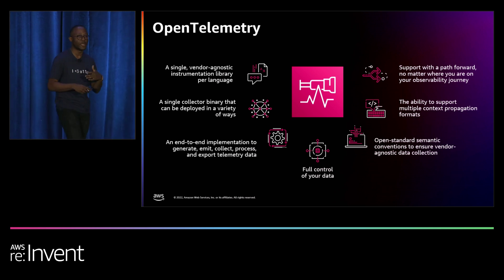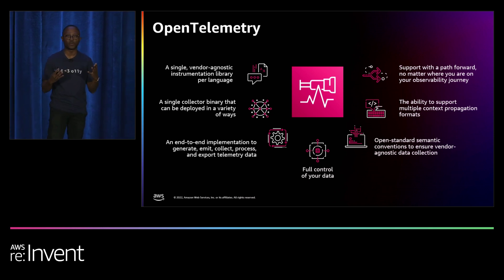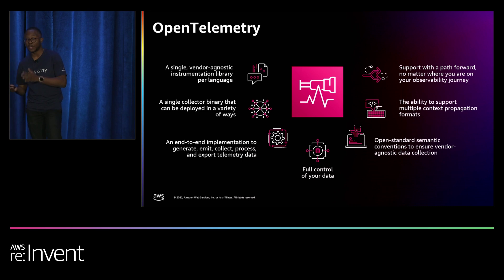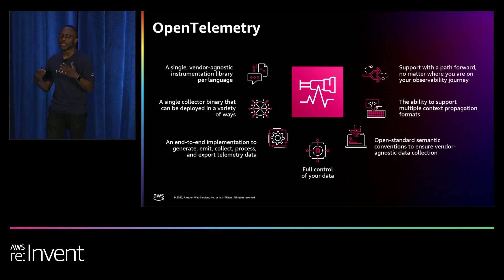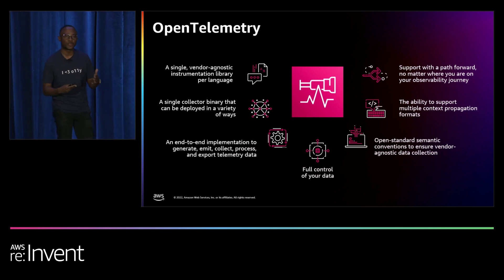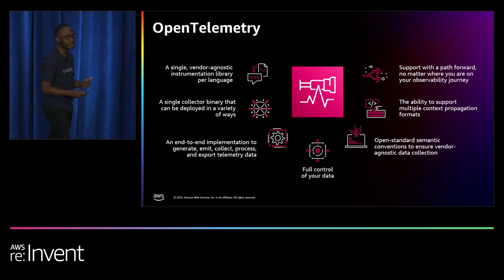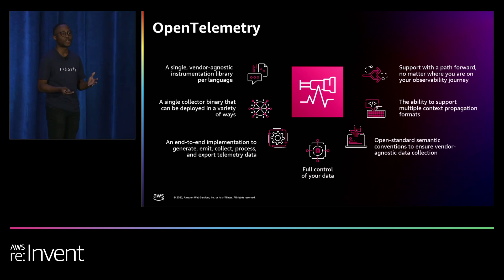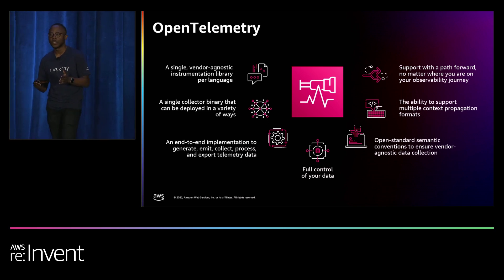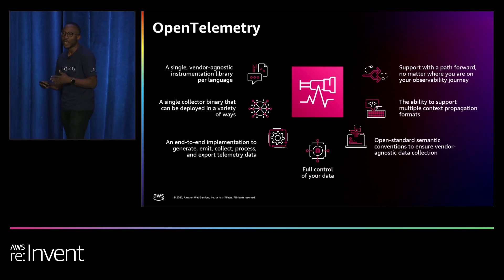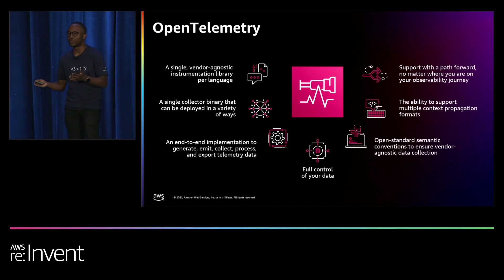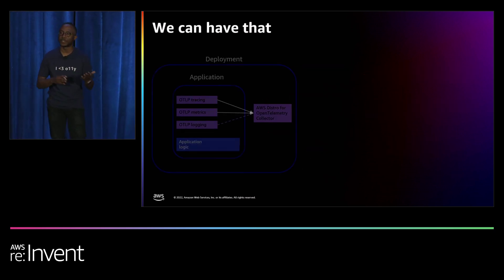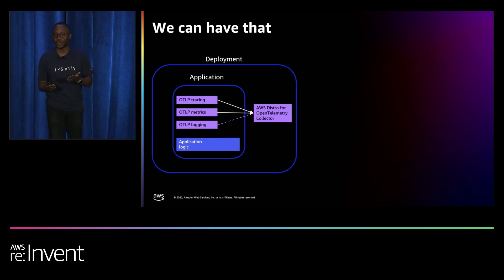OpenTelemetry comes to solve that problem. It's a single, vendor-agnostic instrumentation library. You have one protocol with different per-language implementations, so you can instrument your application once. When it comes to deployment, you have a single binary — the collector — that flows signals to the backends of your choice. You have full control of your data, and you can have pipelines to direct data to whatever backends you're interested in.